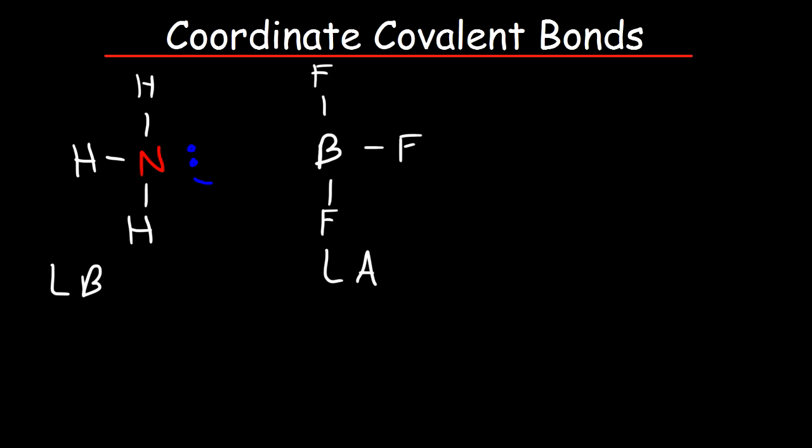So, ammonia can donate a pair of electrons to form a bond between nitrogen and boron. We're going to get a product that looks like this. Now, this particular bond between nitrogen and boron is a coordinate covalent bond because the two electrons in this bond came from only one atom.